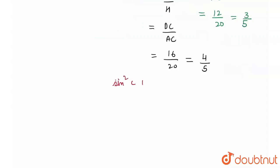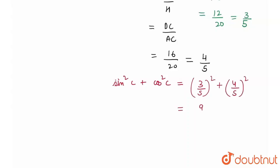The question asks for sin²C + cos²C. Sin²C = (3/5)² = 9/25, and cos²C = (4/5)² = 16/25. Therefore, sin²C + cos²C = 9/25 + 16/25 = 25/25 = 1. This is the required answer.